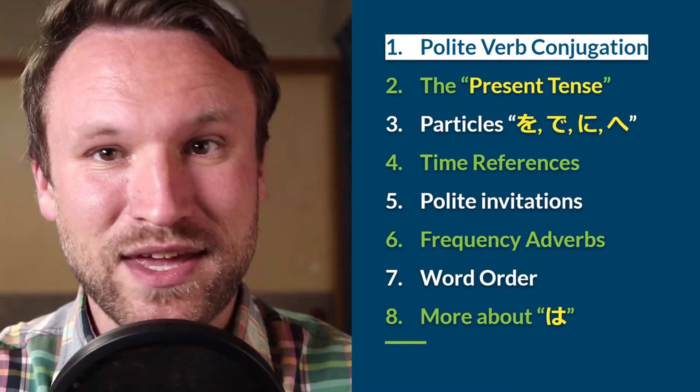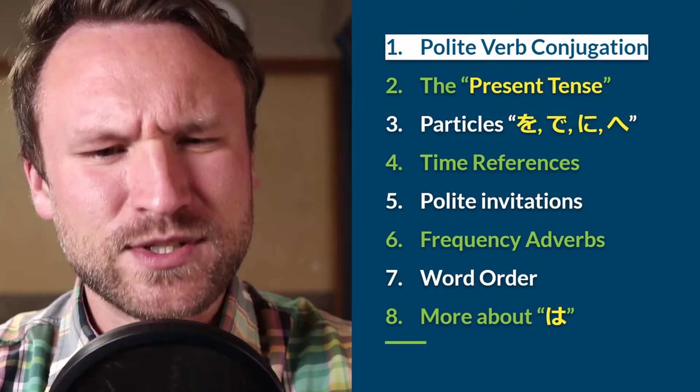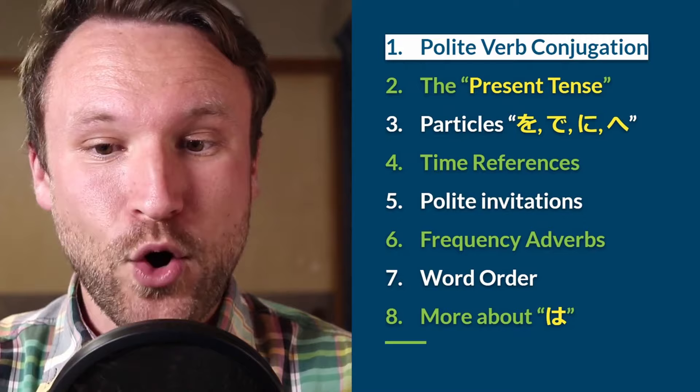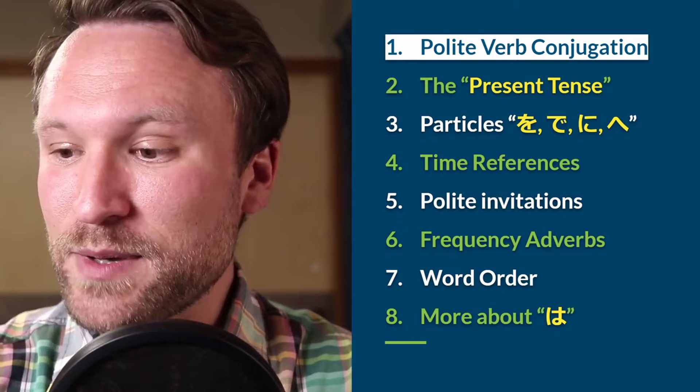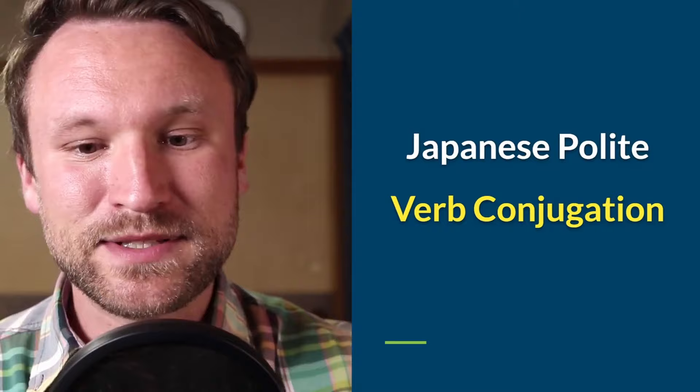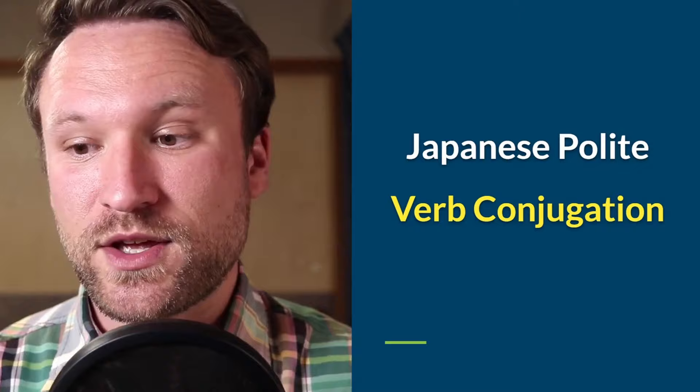Section two is the present tense, which is basically what we just covered but in a little more detail. We're going to cover the particles o, de, ni, and e; time references; polite invitations; frequency adverbs; word order; and a bit more about wa. If you're watching on the replay, there are timestamps to each section in the comments and description so you can skip around. Let's jump into Japanese polite verb conjugation.